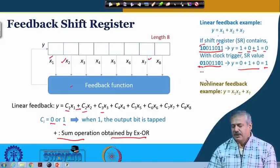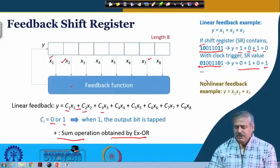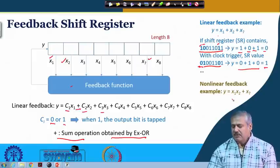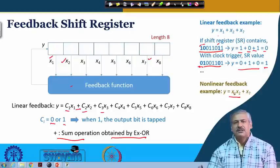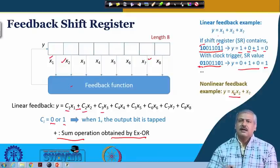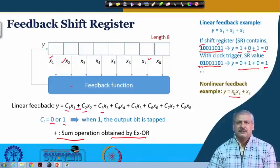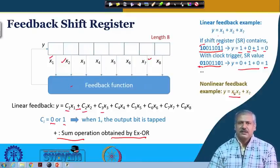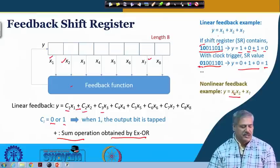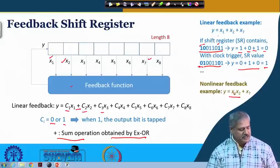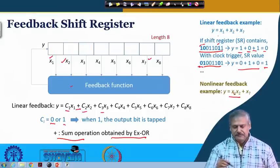When we say non-linear, that means operations other than sum — for example x1 AND x2 then XOR x7. These are the things that come under non-linear feedback, which we are not discussing here; our topic is linear feedback shift register.